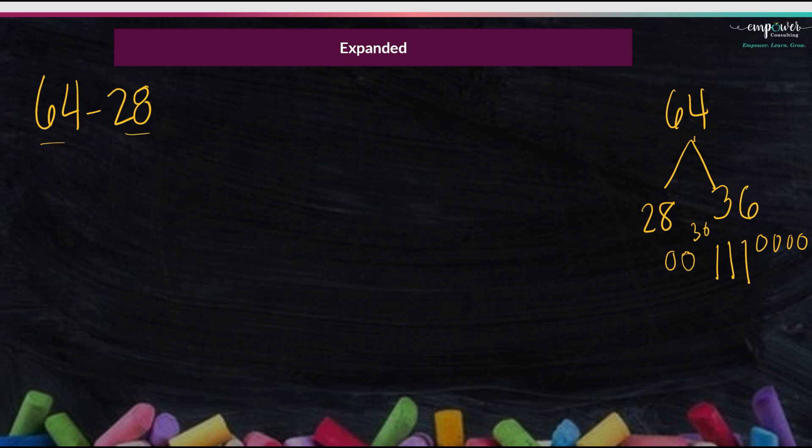Or I can see these numbers and think, well, they're not as friendly. I could expand them and know that 64 is the same as 60 plus 4, and 28 is the same as 20 plus 8. I really like this strategy for students that have a hard time holding place value. Because a lot of kids will say, well, 6 minus 2, and they forget that this number is actually a 10, and that this number is our 10s as well.